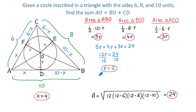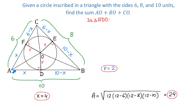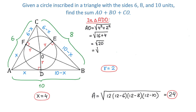Now that we know X and R, we can find AO, BO, and CO. Starting with triangle ADO: we know X equals 4 and R equals 2, and we need to find the hypotenuse. AO equals the square root of X squared plus R squared, which is the square root of 4 squared plus 2 squared, giving the square root of 16 plus 4 equals square root of 20. Simplifying, we write 20 as 4 times 5, so AO equals 2 root 5.